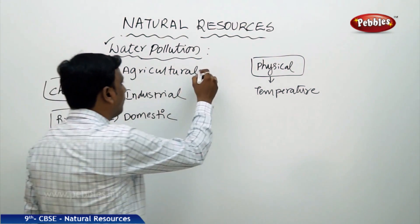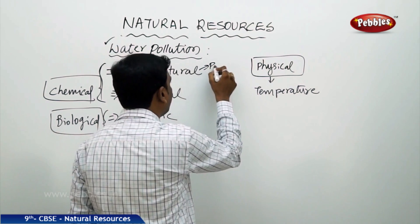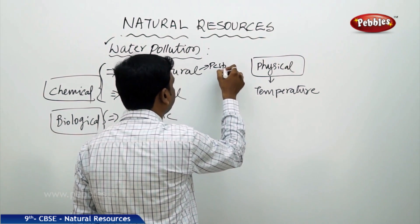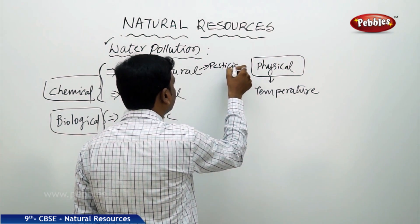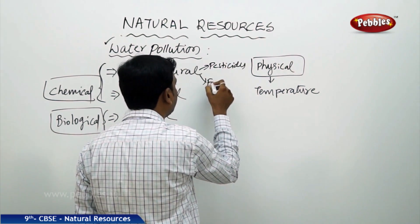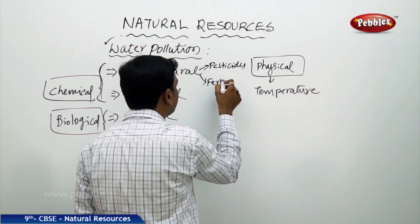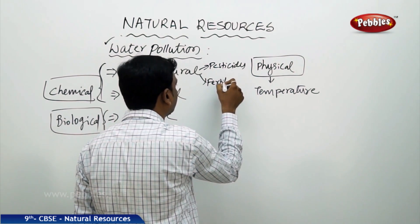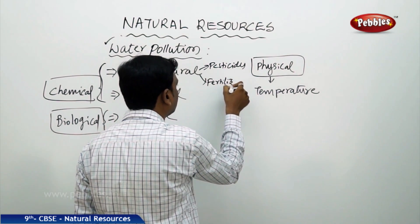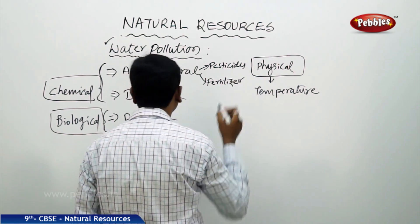So pesticides and fertilizers are examples of agricultural chemical water pollution.